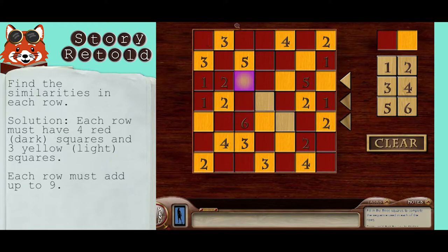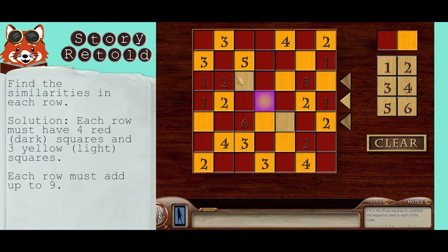Notice that there are one, two, three, four reds and three yellows. One, two, three. So each row needs to have four reds and three yellows.